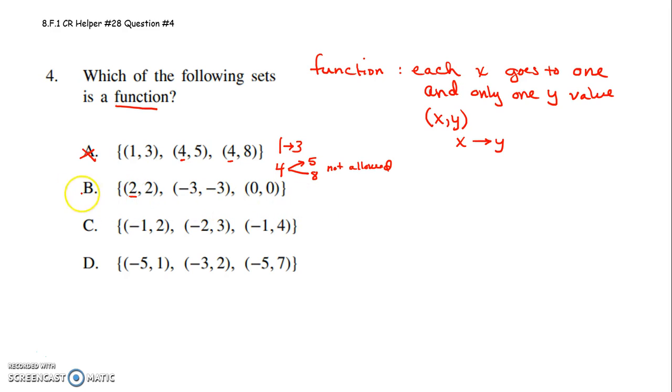Here, 2 goes to 2. So for letter B, 2 is going to 2. I like that. Negative 3 goes to negative 3. I like that. 0 goes to 0. None of them are going off in two different directions. That is a function.